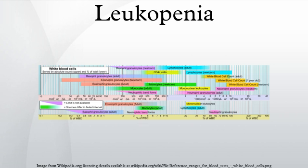Leukopenia can be identified with a complete blood count, using blood reference ranges for various types of leukocytes. The 2.5 percentile is a common limit for defining leukopenia.